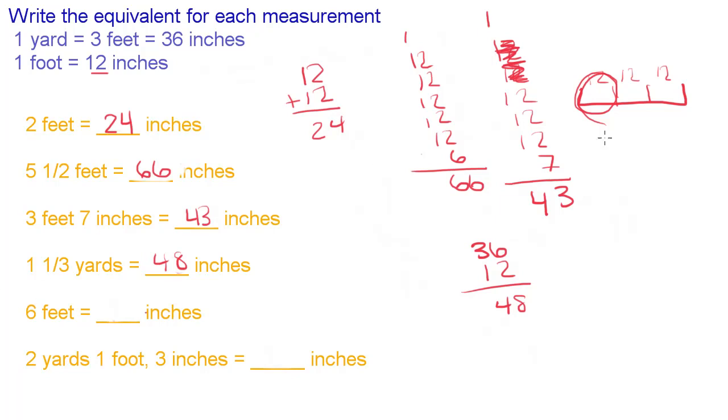So you have 6 feet. Simple enough. We have 12 inches. Using addition only. 2, 4, 6, 8, 10, 12. Carry the 1. Bring down the 2. That's 72 inches.